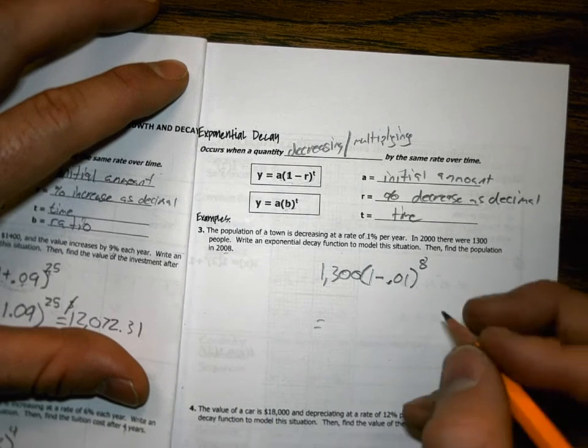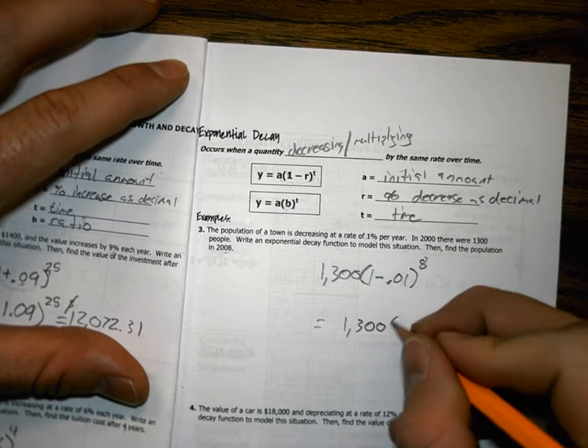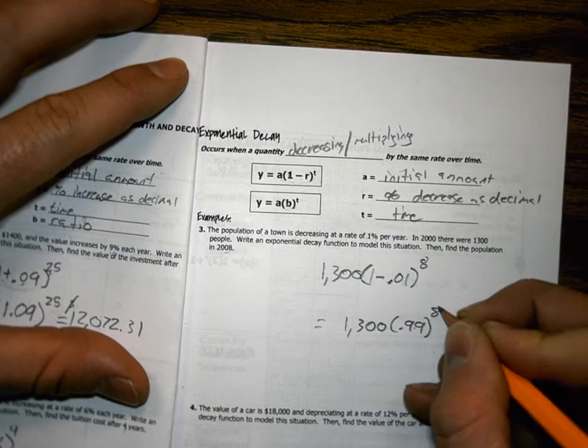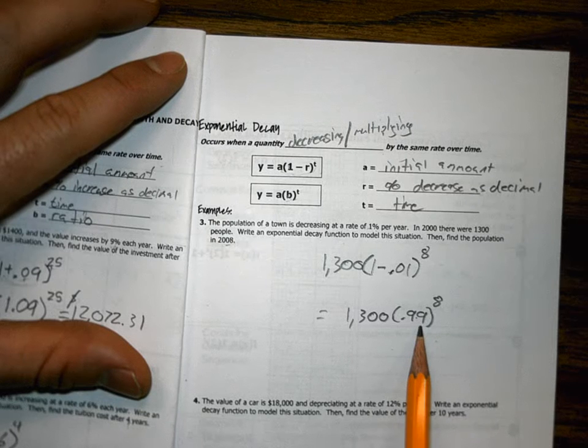What is 1 minus 0.01? Correct. It's 0.99. I get 0.99 raised to the 8th power. This number is going to get smaller because B is less than 1.